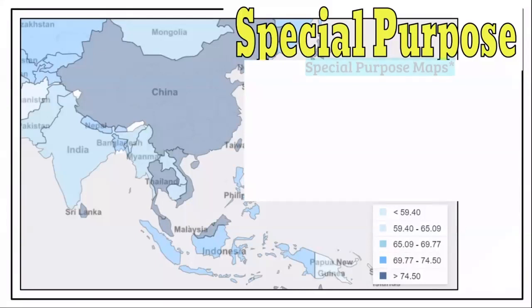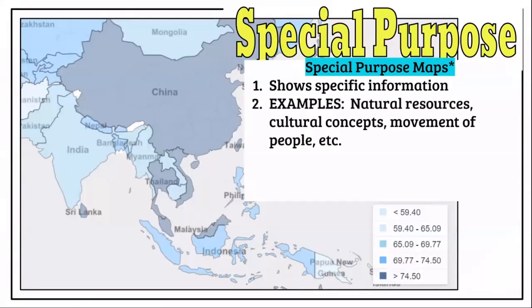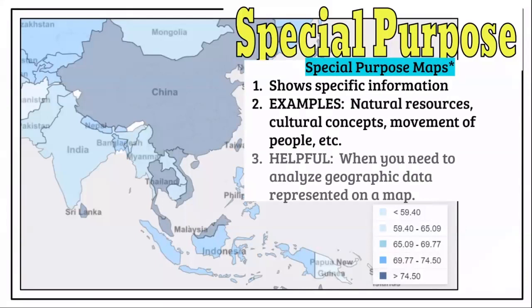The next map we're going to go over is the special purpose map. A special purpose map shows specific information, and there are a ton of different types. This one was created using information from the World Bank database, and it's of Asia. Different examples could show natural resources, cultural concepts like the main religion or official language, political affiliation, movement of people, or trade.